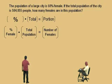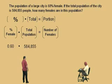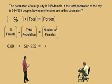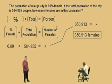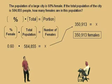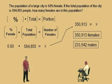Which one are we trying to find — the percentage, the total, or the portion? The portion, because it's the number of females we're looking for in this total population. Our percent female as a decimal is 0.60. Our total population is 584,855. And we put x for the number of females. Take 0.60 times 584,855 — that gives us 350,913 females. Now, if that's the number of females, how do we find the number of males? Subtract. Take 584,855 minus 350,913, and we get 233,942 males.